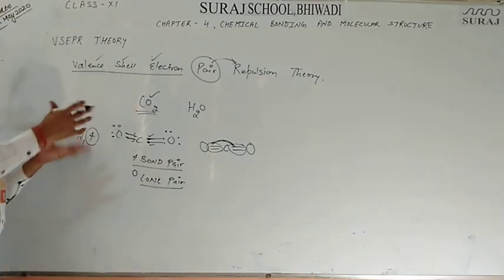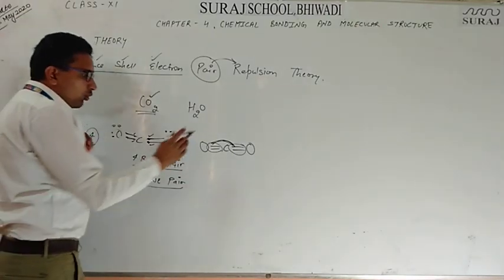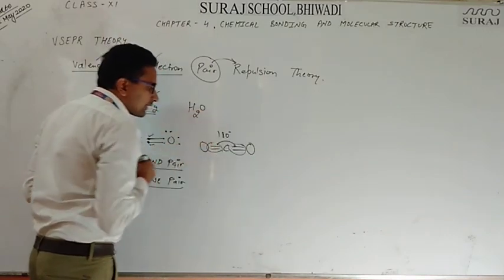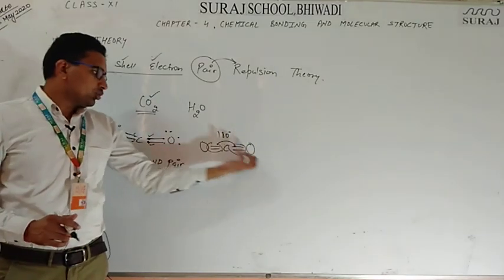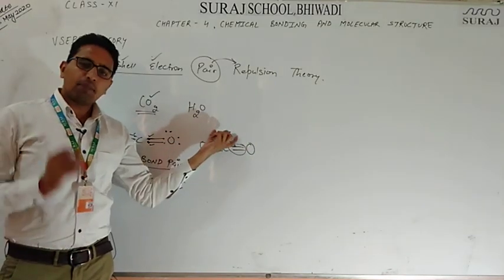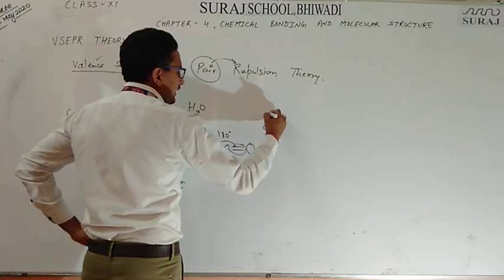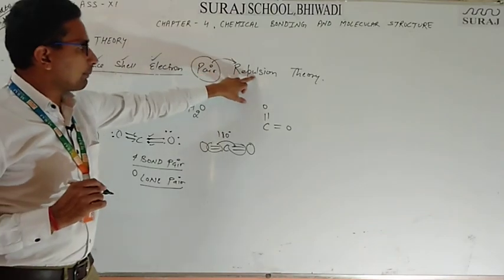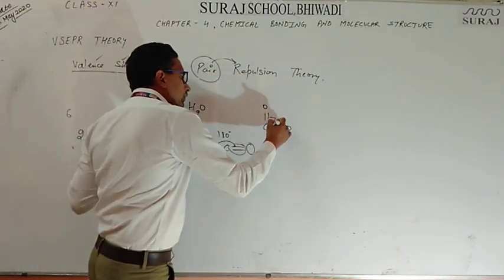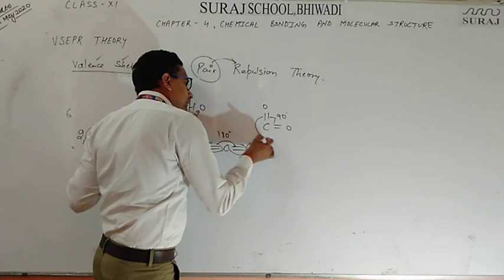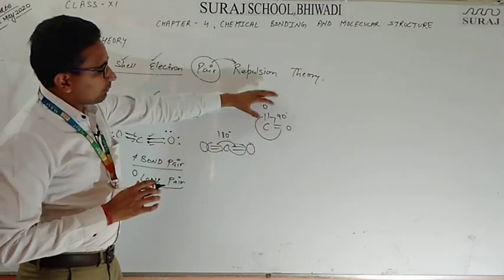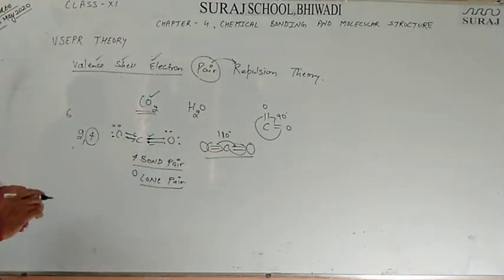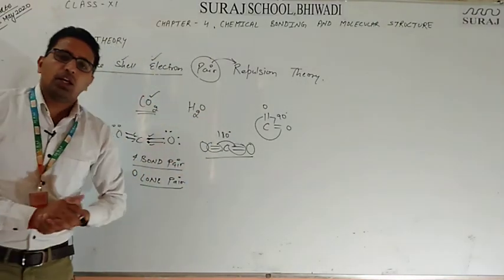When we have two bond pairs, they go to the maximum distance from each other. What is the maximum distance for two pairs? It is 180 degrees. So in CO2, the angle between the two bond pairs is 180 degrees. The electron pairs repel each other — this bond pair and this bond pair repel. So the bond angle in CO2 is 180 degrees.